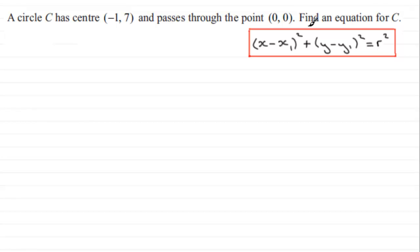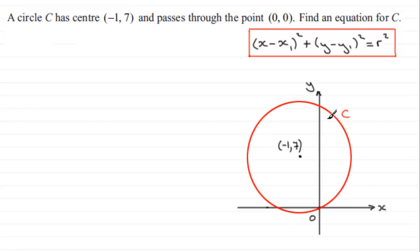So when you've got a question like this, good idea just to draw a sketch for it. And if we were to draw our circle here with the center at coordinates minus one seven, it passes through the origin here. So we've already got the center coordinates x1 and y1, so we're okay there.